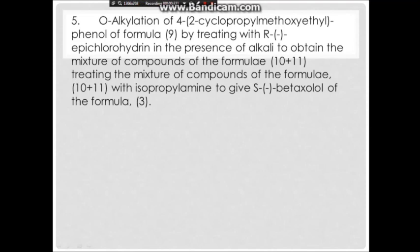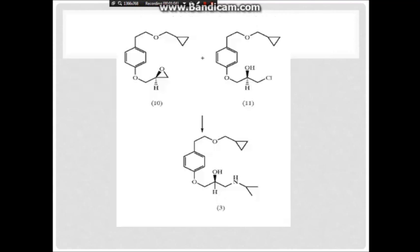The next step is oxygen alkylation. Oxygen alkylation of 4-(2-cyclopropylmethoxy)ethanol by treating with R-epichlorohydrin in the presence of alkali gives a mixture of compounds of formula 10 plus 11. This mixture will combine with isopropylamine to give S-betaxolol. This diagram shows the synthesis of R-epichlorohydrin, so we can understand that 10 plus 11 will form the final structure.